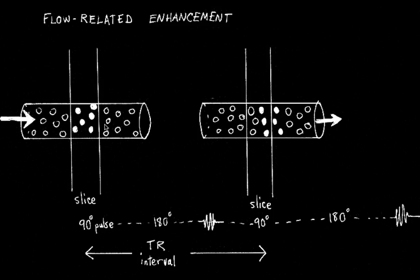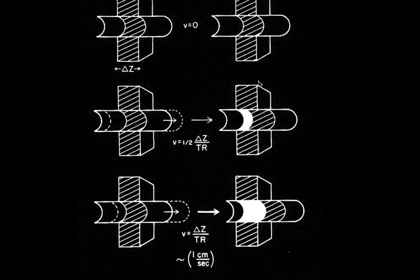Here's an example. Nuclei are flowing in, and if we give a 90-degree pulse on the slice plane, we saturate the nuclei in that slice. After a TR interval, some of those saturated nuclei have flowed out of the voxel, and new unsaturated nuclei have flowed in. When we give another 90-degree pulse, we will have many unsaturated nuclei, and therefore we get much higher signal intensity from these nuclei than from those next to them. This is flow-related enhancement.